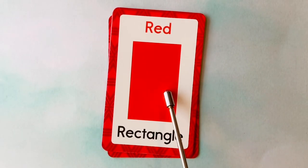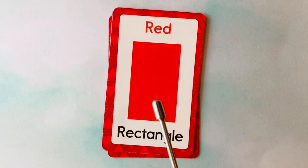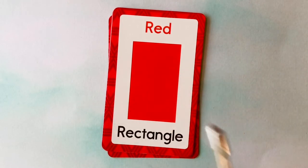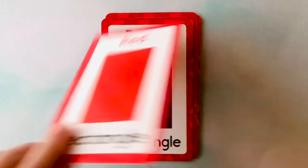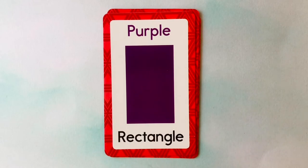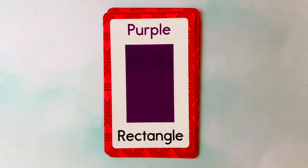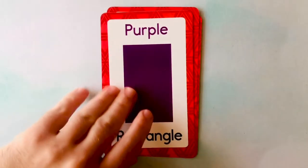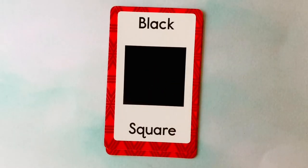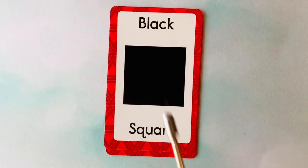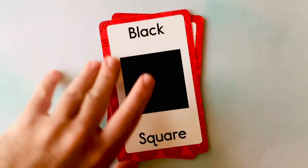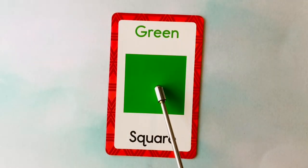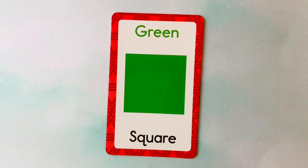This is a rectangle. What color is this rectangle? It's a red rectangle. This is also a rectangle. What color is this rectangle? It's a purple rectangle. This is a square. What color is this square? It's a black square. This is also a square. What color is this square? It's a green square. Nicely done.